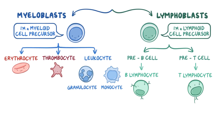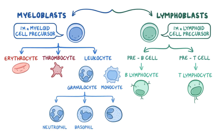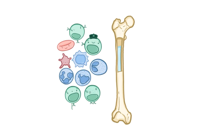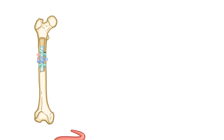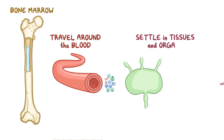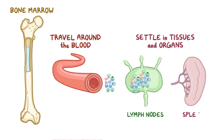Granulocytes are cells with tiny granules inside of them. They could be neutrophils, basophils, or eosinophils. If a hematopoietic stem cell develops into a lymphoid cell, on the other hand, it'll mature into some other kind of leukocyte — a T cell, B cell, or natural killer cell, which are referred to as lymphocytes. Once the various blood cells form, they leave the bone marrow and travel around the blood, or settle down in tissues and organs like the lymph nodes or the spleen.